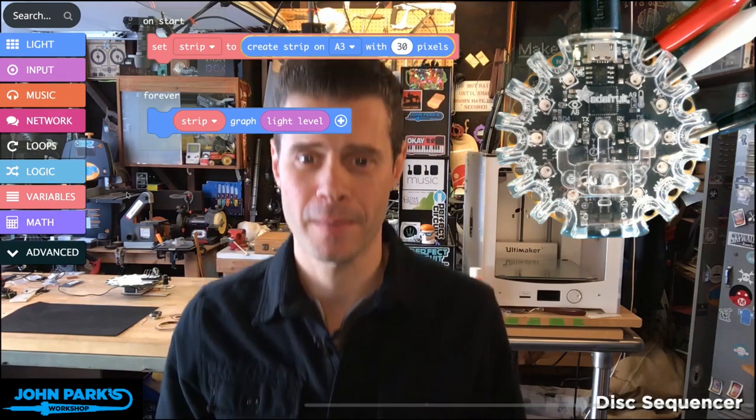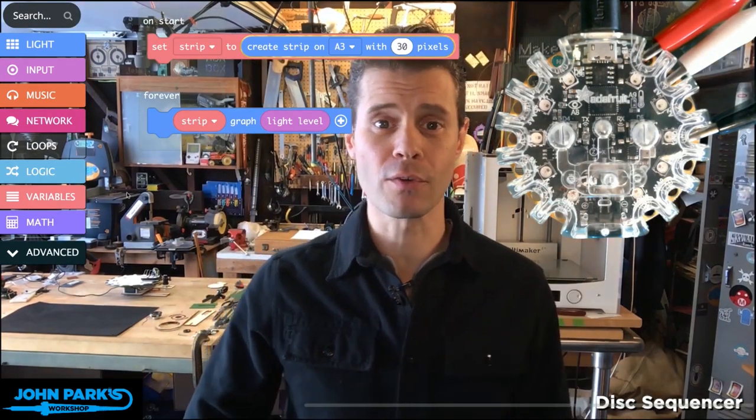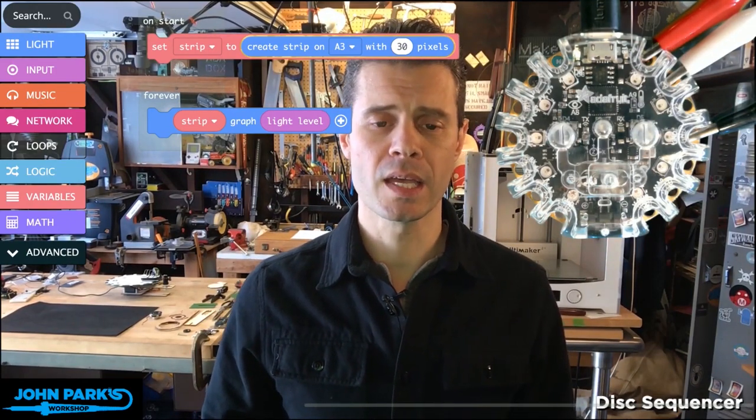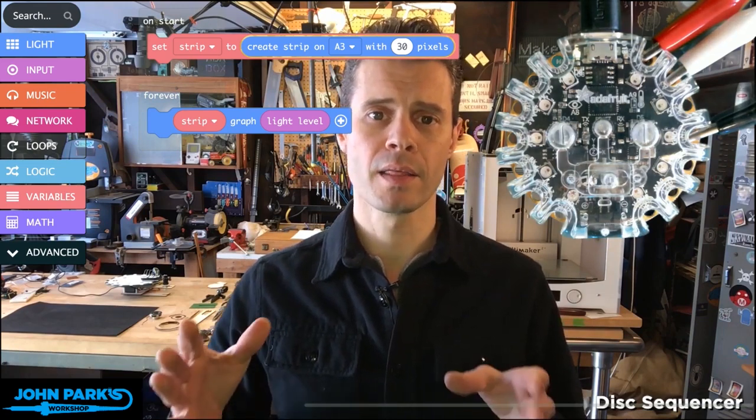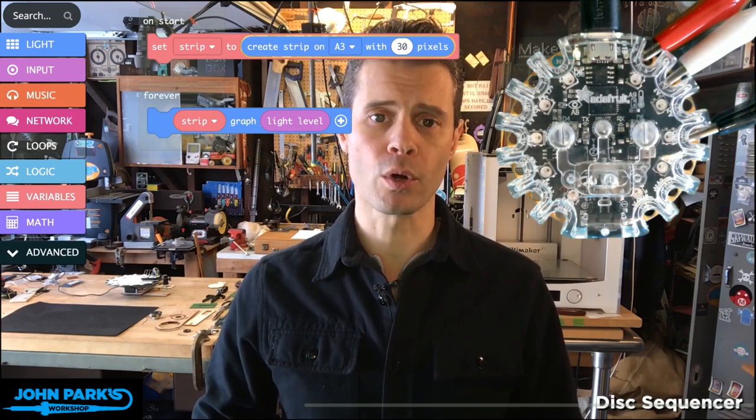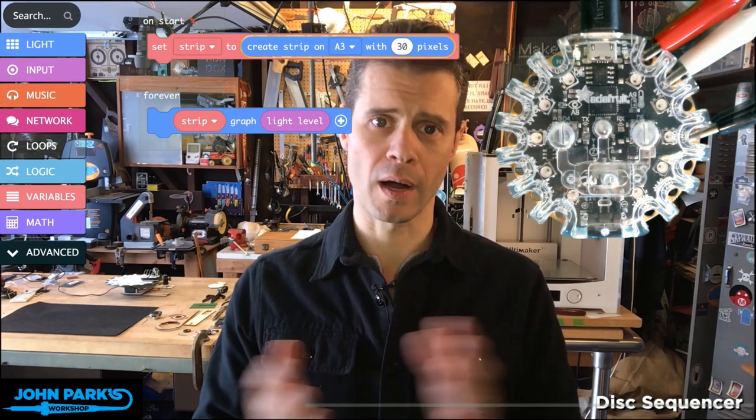That's right, it's the Make Code Minute. This is Make Code and I'm right inside. For today's Make Code Minute, I'd like to talk about using an external neo pixel strip on the Circuit Playground Express in Make Code in order to graph the light level in the room or as you cover up the light sensor.